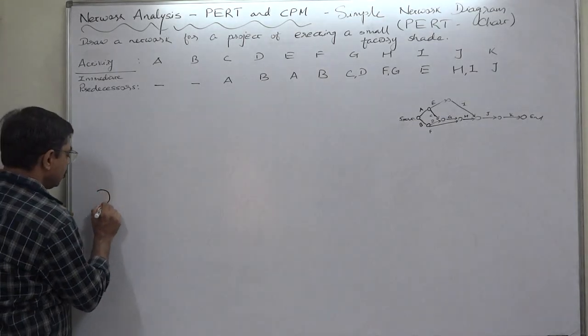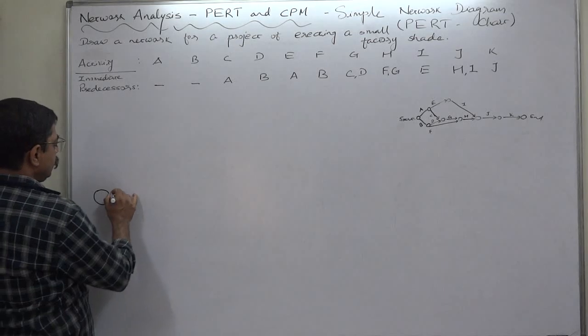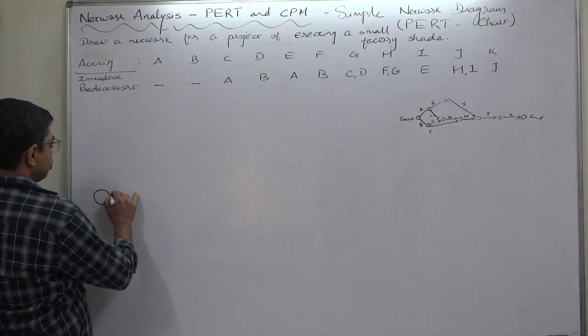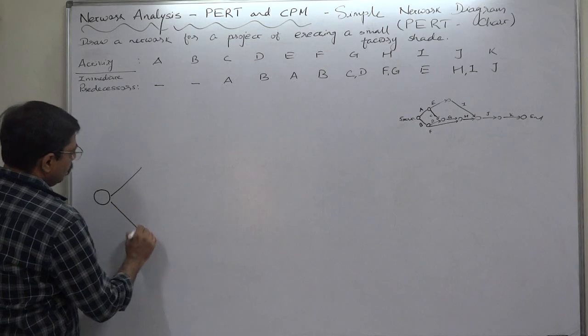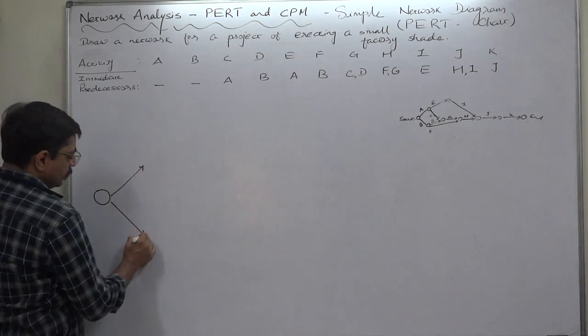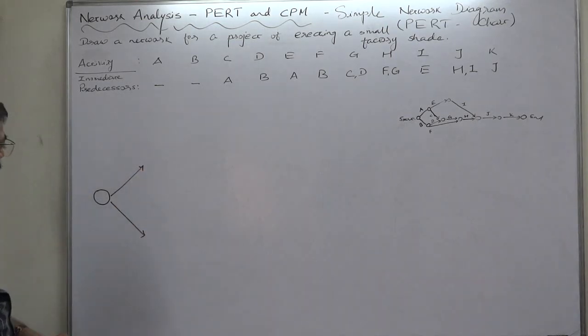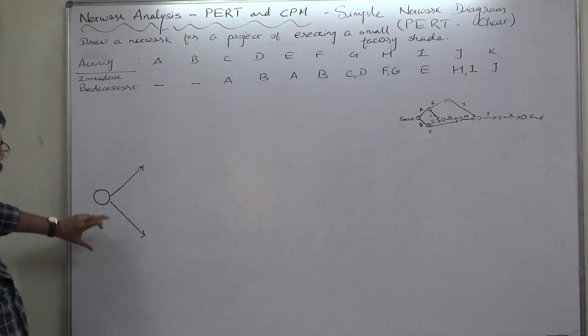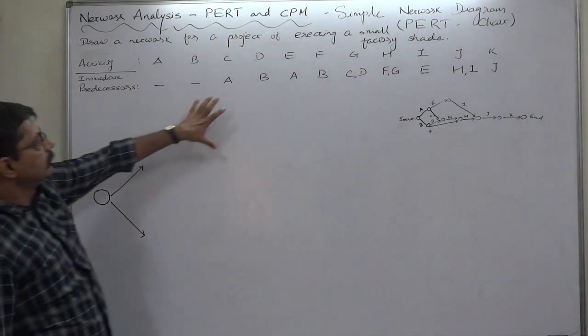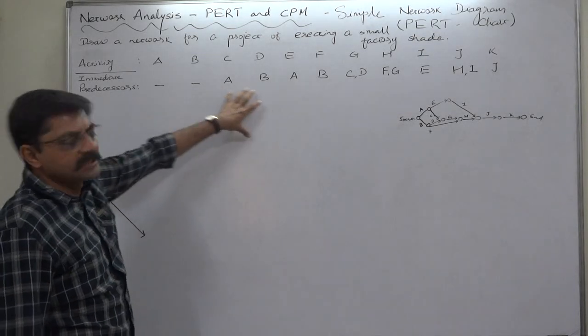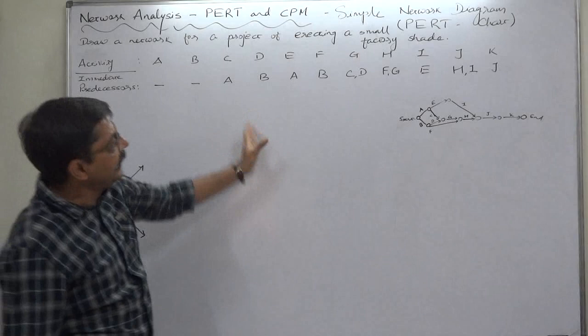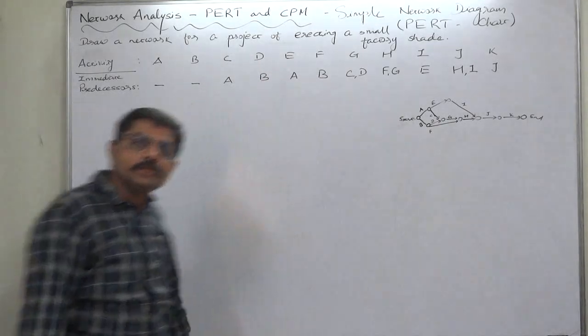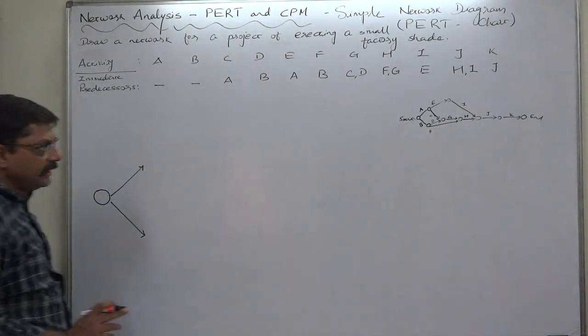Let's start. As we discussed, the project starts with two activities A as well as B. Now, as a student, the first question is: which should we name A and which B? This arrow or this arrow? We have two choices—A B or B A. What should we do?